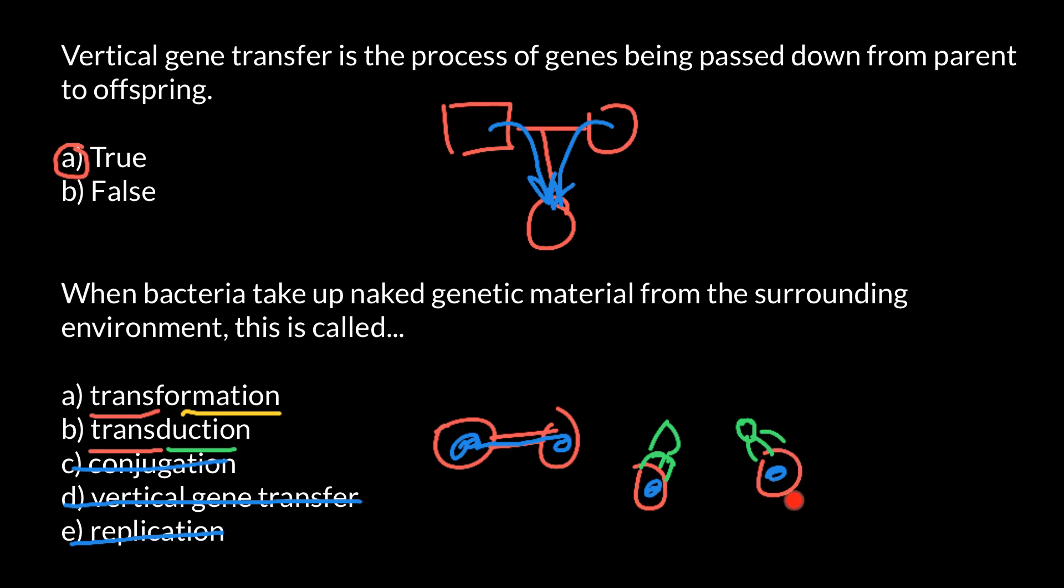So another unrelated bacteria also can get, say, resistance for some, for example, antibiotics. And this is how horizontal gene transfer works in transduction, what we call transduction.